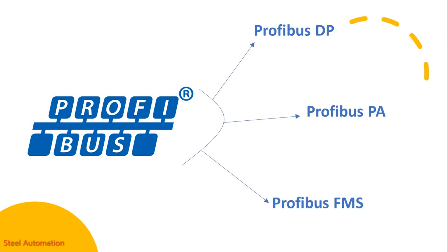Profibus is available in three compatible versions: Profibus DP, Profibus PA, and Profibus FMS.